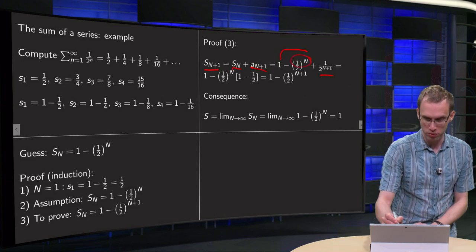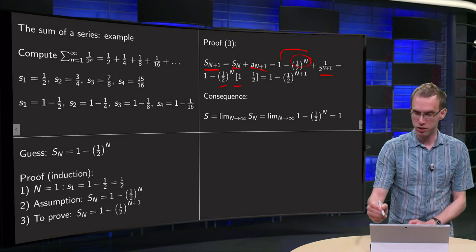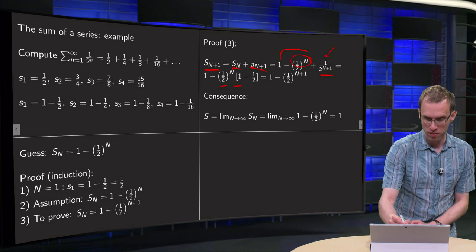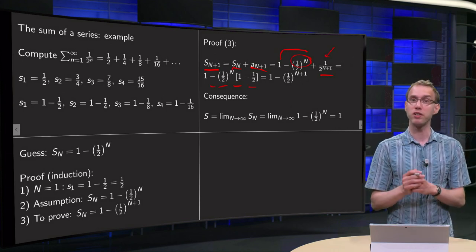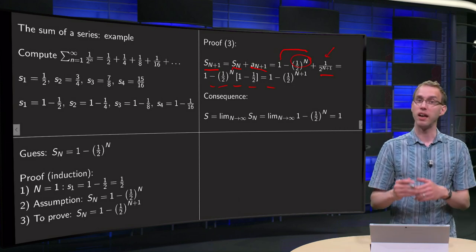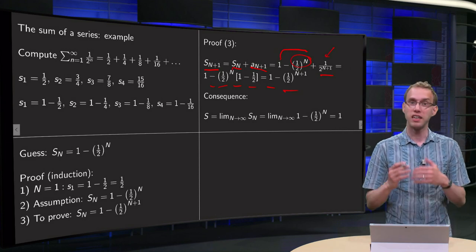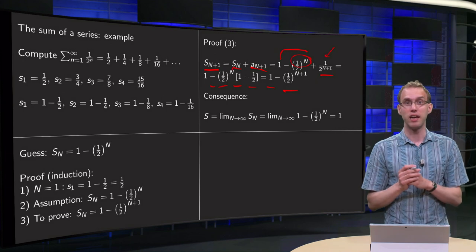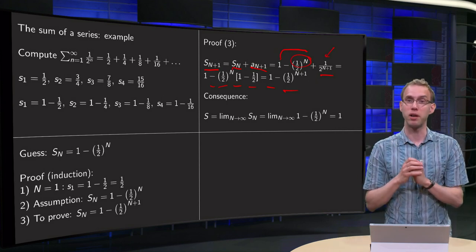We have (1/2) to the power N here times minus 1, and then we combine terms: 1 minus (1/2) equals 1/2, so what we get is 1 minus (1/2) to the power N plus 1. And that is exactly what we needed to prove — S_{N+1} equals 1 minus (1/2) to the power N plus 1.